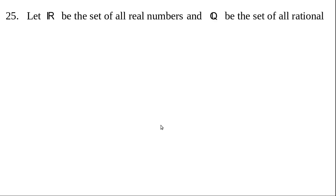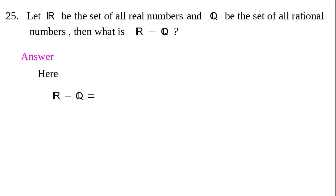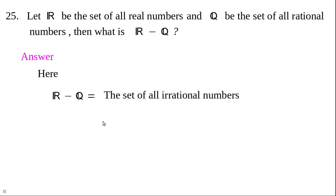Question 25: R is the set of all real numbers and Q is the set of all rational numbers. R minus Q means the set of all elements which are in R but not in Q — that is, real numbers which are not rational numbers. Real numbers that are not rational are called irrational numbers. Therefore R minus Q is the set of all irrational numbers.